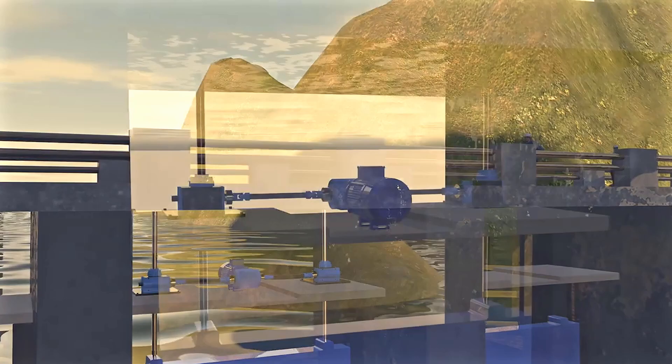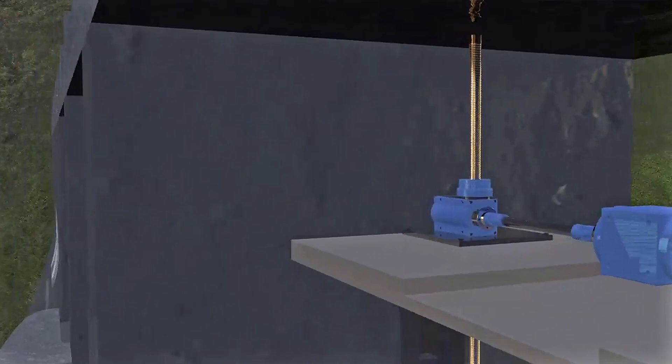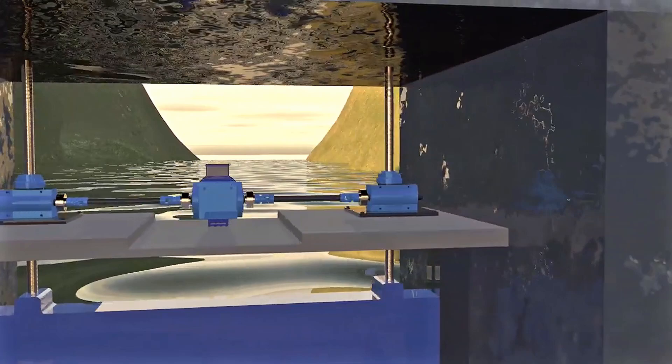This motor transmits the motion to a two-set screw jack lifting mechanism, which converts the rotary motion into linear motion. The gates, by moving up and down, allow the control of water level and flow rate in rivers and canals.